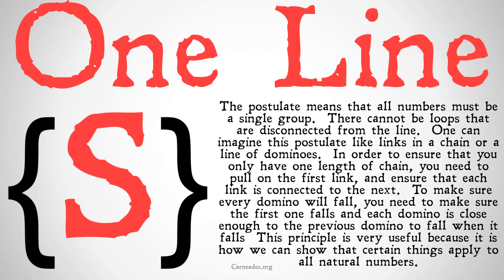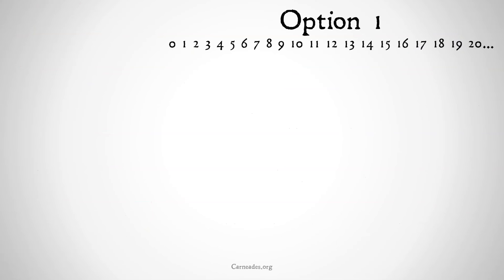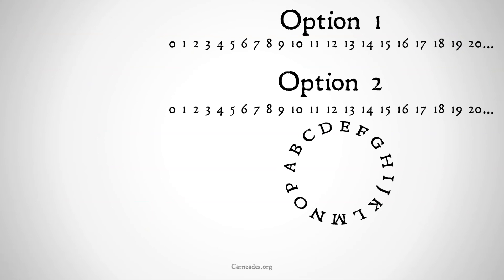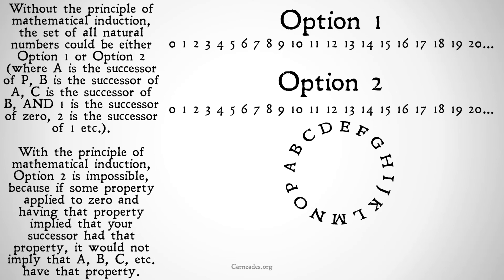This principle can be useful, because it's how we can show that certain things apply to all natural numbers. Think of it like this: we have option one and option two. Based on the postulates we've done so far, we can't prove that the natural numbers are not option two. Without the principle of mathematical induction, the set of all natural numbers could be either option one or option two. We want it to look like option one, but we don't have anything that can disprove option two.